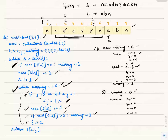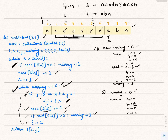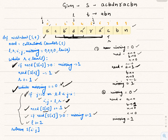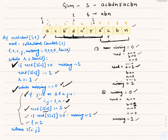We continue like this — expanding the right pointer and shrinking the left — until we eventually find a window of minimum size holding all characters in the pattern. This minimum window is the final answer. This is how we find the minimum substring window.